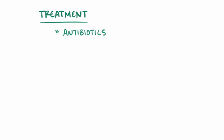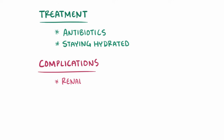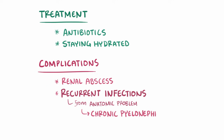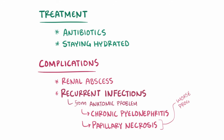Treatment is typically antibiotics and making sure that the individual stays well hydrated. Like most bacterial infections, there's also a possibility of a renal abscess that can form as a complication. Also, if there are recurrent infections — which can be the case in people with an anatomic problem that allows bacteria to easily cause infections — then it can lead to chronic pyelonephritis, as well as papillary necrosis, or death of the renal papillae tissue, which has a much worse prognosis because that can affect the kidney's overall ability to function.